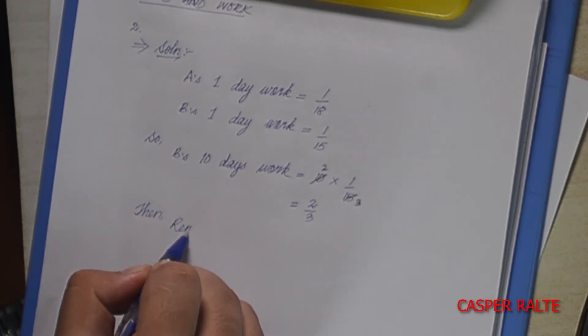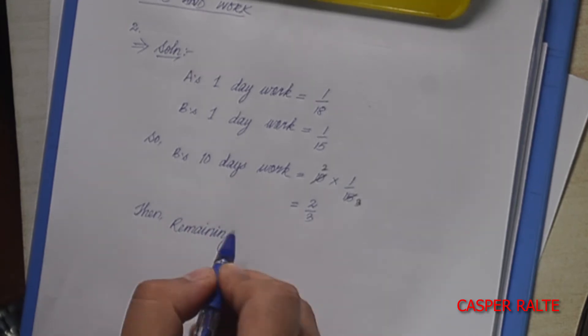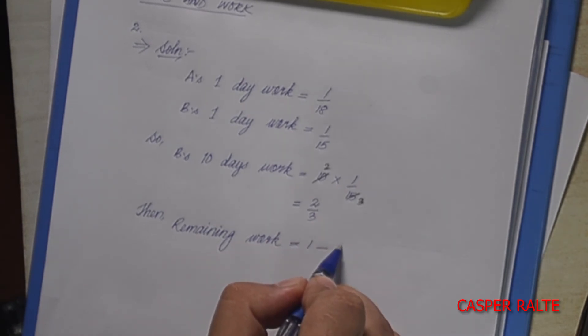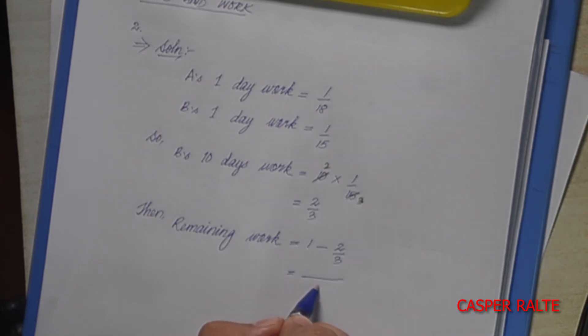Remaining work is equal to one minus two by three. Three minus two is one, so one by three.